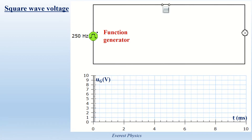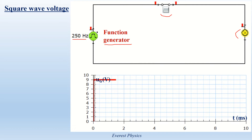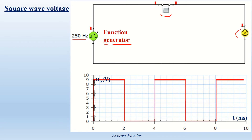Square wave voltage. Look at the closed series circuit. We have a closed switch, a lamp, and a function generator which provides a square wave voltage at a frequency of 250 Hz and at an amplitude of 9 V. The second figure is the graph that represents UG as a function of time. I will turn on the simulation so that you can observe the graph of UG versus time. Now let's analyze the graph. The voltage is periodic because it repeats itself identically during a constant time interval, which is equal to 4 ms as shown in the figure.